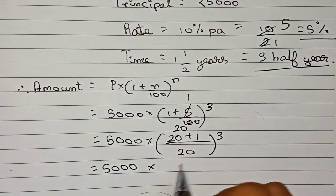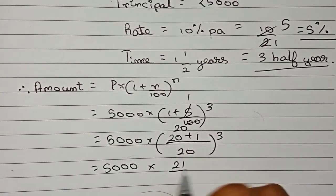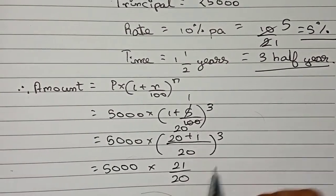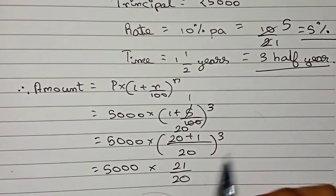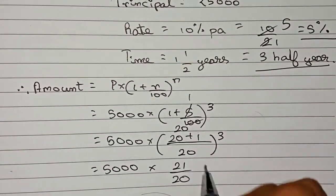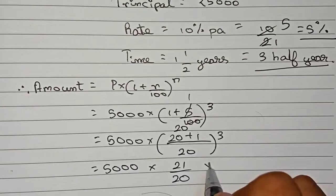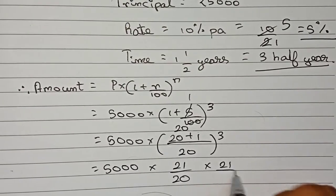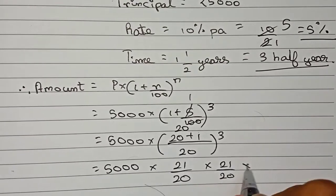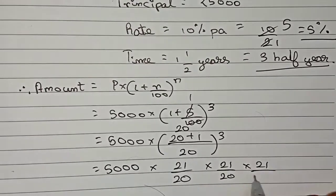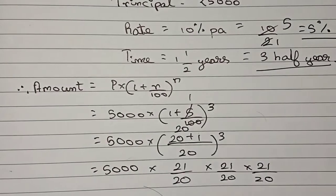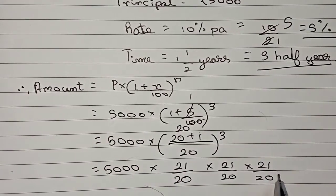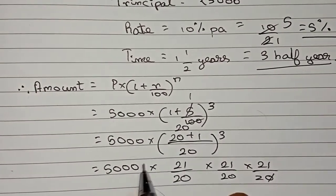Expanding (21/20)³ means writing 21/20 three times multiplied together: 21/20 × 21/20 × 21/20. We also cancel zeros between 5000 and the denominator.